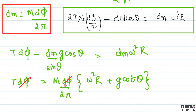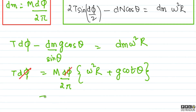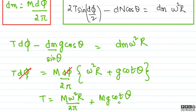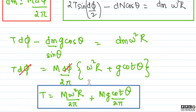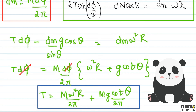dm की value M·dφ/(2π) रखने पर dφ से dφ cancel हो जाता है। तो final answer आता है: T = Mω²R/(2π) + Mg·cotθ/(2π)। यही हमारा final answer है। I hope कि आपको यह solution अच्छे से समझ आया होगा। In case कोई doubt रह जाता है तो feel free to contact me, I'll be very happy to help you. Take care, bye bye!